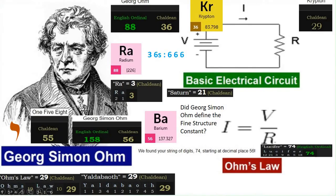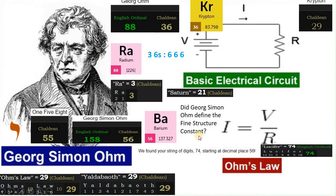Now we're going to see what Ohm's Law is about. Georg Simon Ohm, the man at the origin of Ohm's Law, is 158 in English ordinal, and 158 is 55 in Chaldean. 55 is 5 plus 5 is 10, like the yod. 56 in Chaldean matches element barium. The atomic mass of barium is 137, and this corresponds to the fine structure constant. Does this mean that Ohm's Law is the fine structure constant?